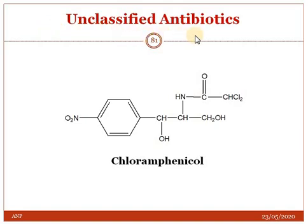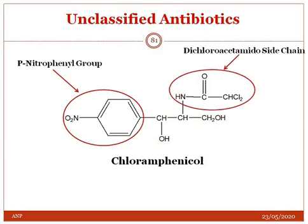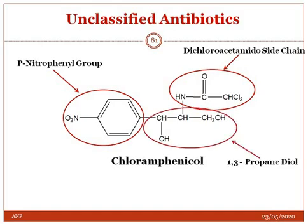An example of unclassified antibiotics is chloramphenicol, which is a broad spectrum antibiotic isolated from Streptomyces venezuelae. The three important structural features present in chloramphenicol are: a para-nitrobenzene group, a dichloroacetamide side chain, and a 1,3-propanediol system. Chloramphenicol contains chlorine, is obtained from actinomycetes, and is also known as chloromycetin. The nitrobenzene substitution is probably responsible for its antibacterial activity.